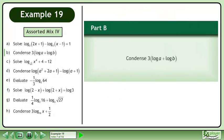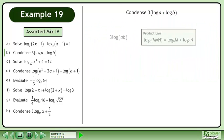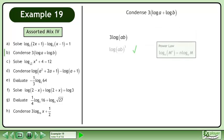In Part B, condense 3 times logA plus logB. Condense using the product law in reverse. Condense using the power law in reverse. The answer is the logarithm of ab cubed.